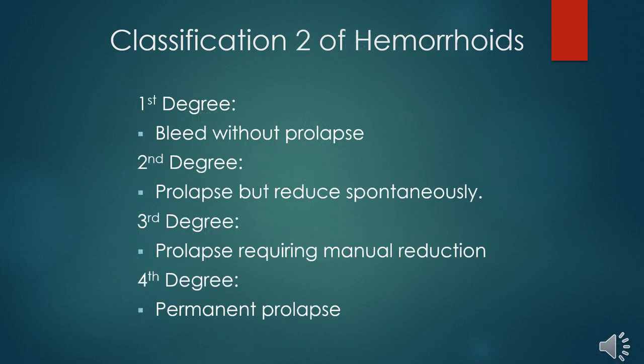The second classification of hemorrhoids is by grades or degrees, one to four. For the first degree, the hemorrhoid will bleed but will not prolapse — it remains within the anal canal. It will bleed without prolapse.